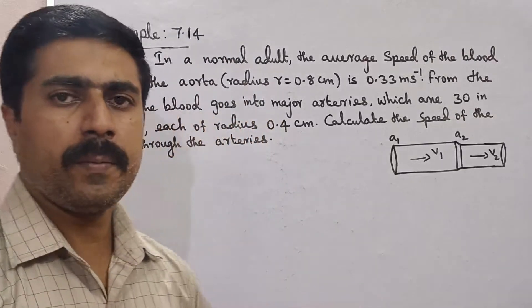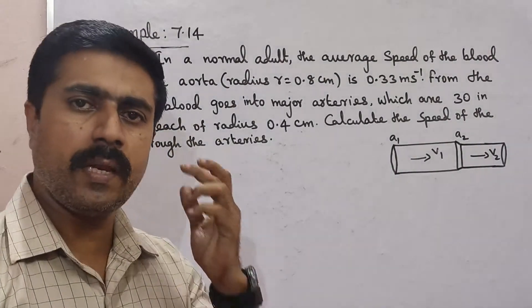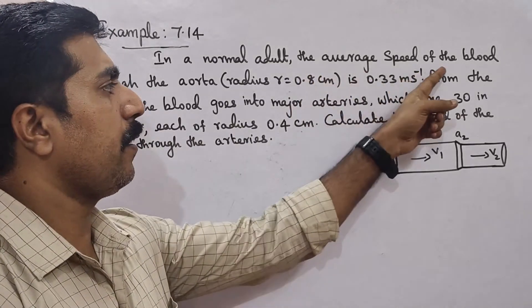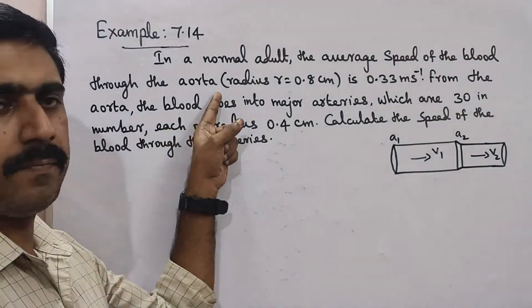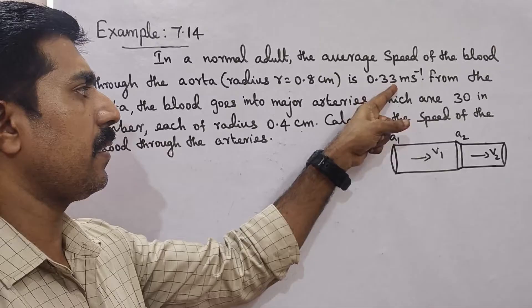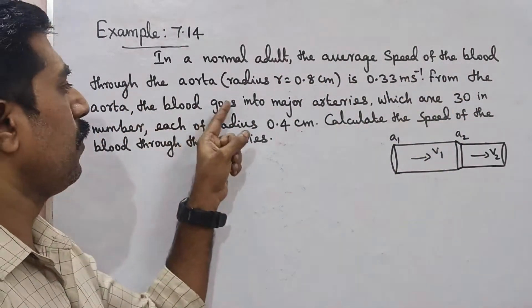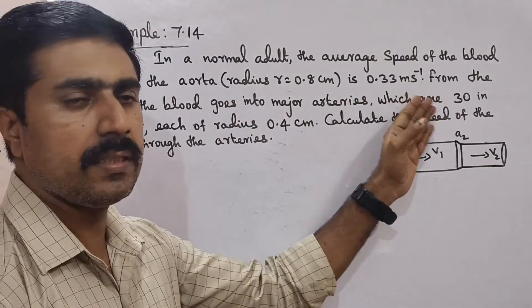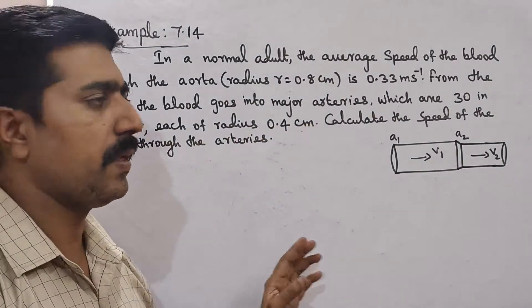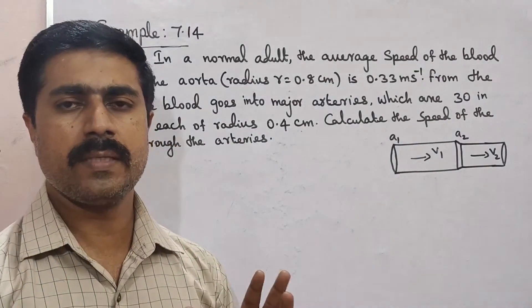Hi students, now we will see a simple problem. Example 7.14. In a normal adult, the average speed of the blood through the aorta of radius 0.8 cm is 0.33 m/s. From the aorta, the blood goes into major arteries which are 30 in number, each of radius 0.4 cm. Calculate the speed of the blood through the arteries.